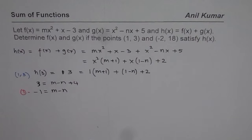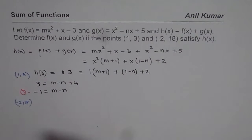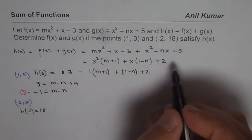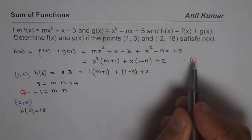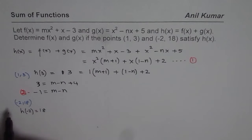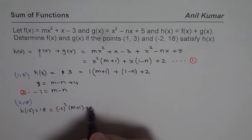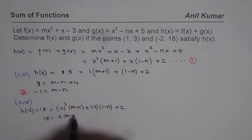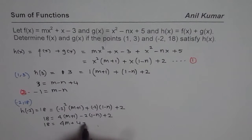Now we substitute the second point (-2, 18). So h of minus 2 equals 18. Substituting x equals minus 2 into h of x: 18 equals (-2) squared times (m plus 1), plus (-2) times (1 minus n), plus 2. That gives 18 equals 4(m plus 1) minus 2(1 minus n) plus 2, which expands to 18 equals 4m plus 4 minus 2 plus 2n plus 2.